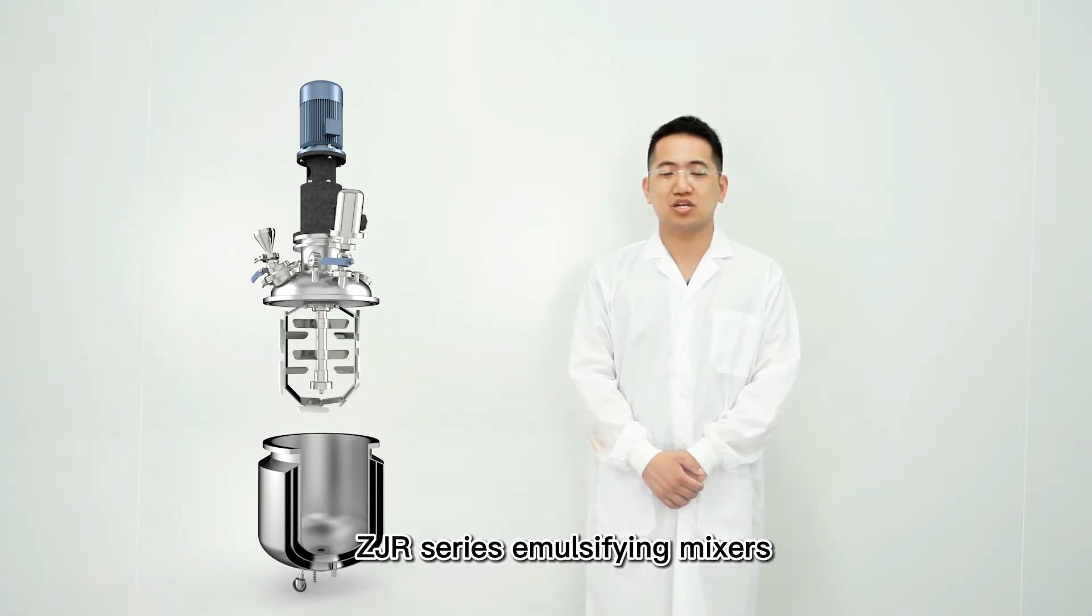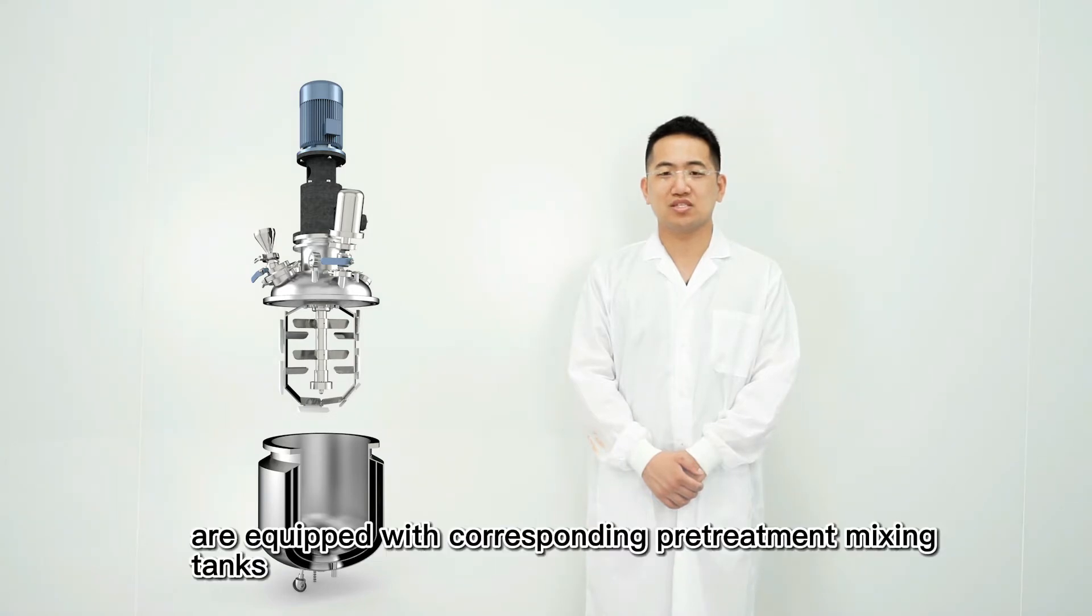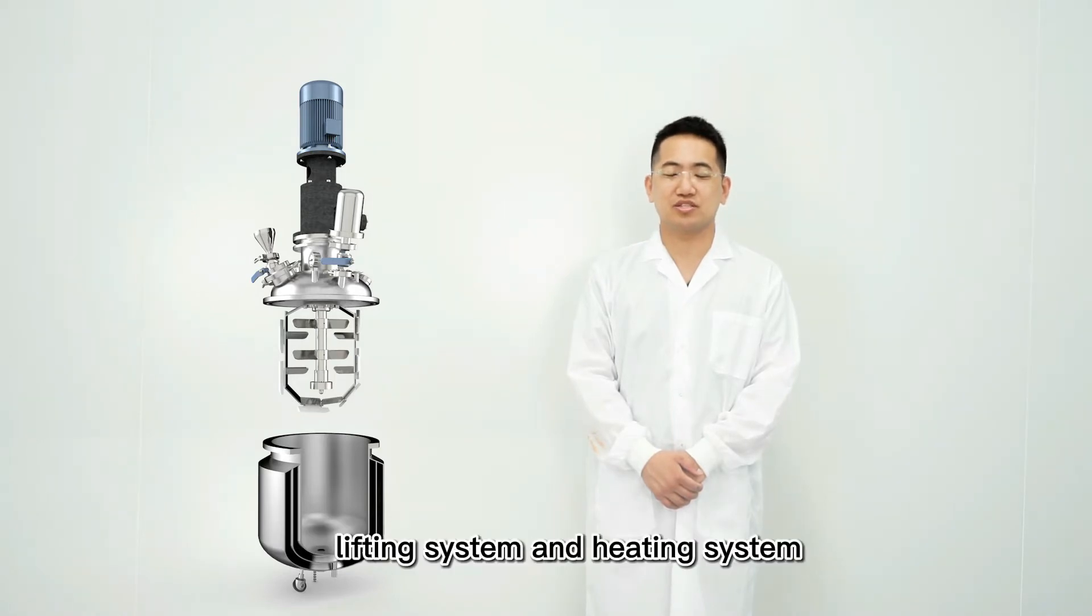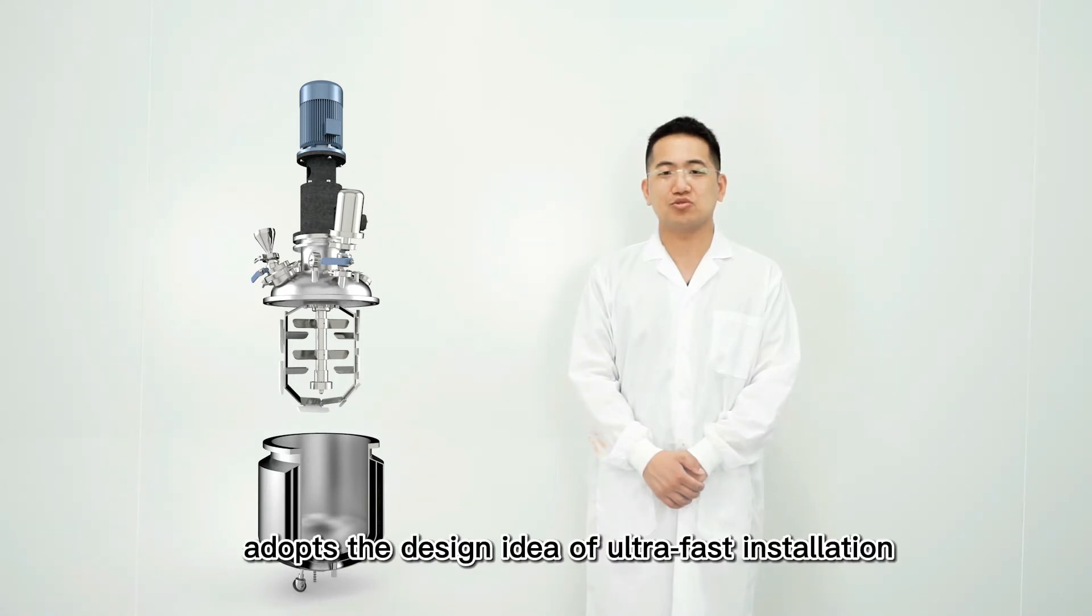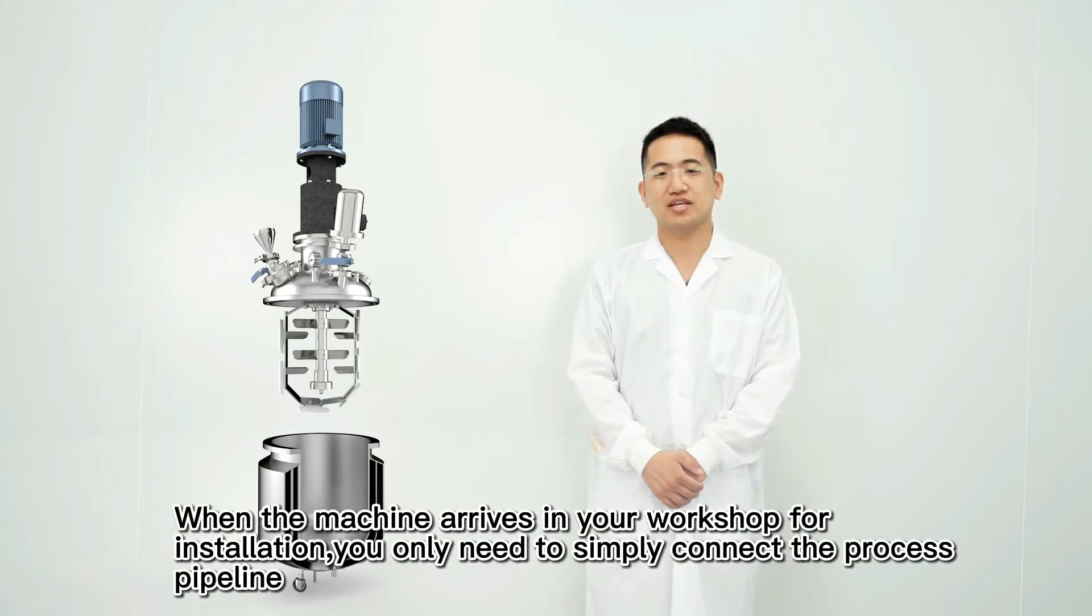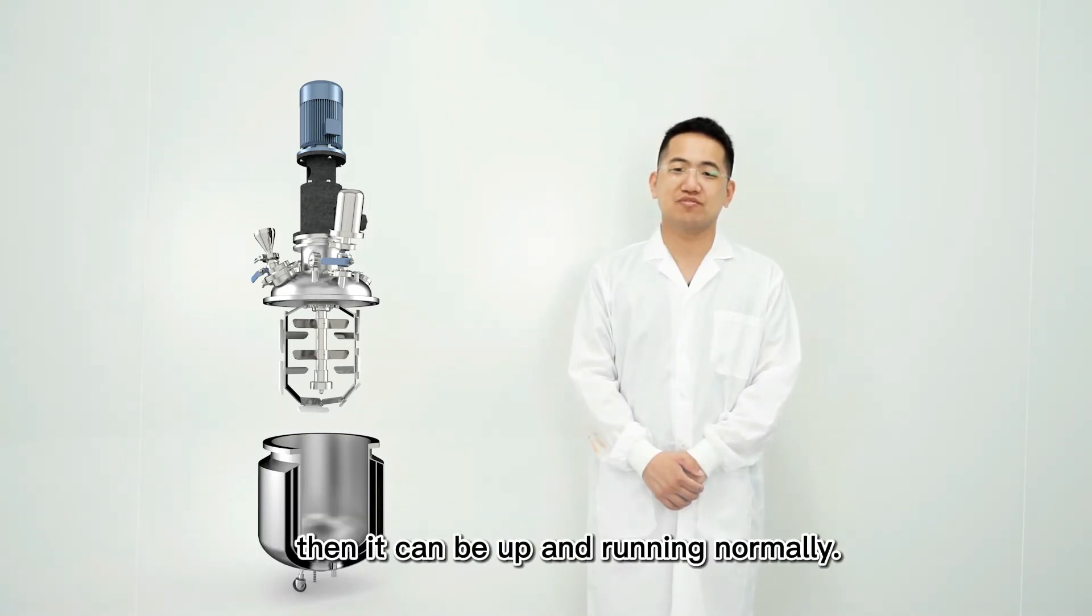The ZJR series emulsifying mixers are equipped with corresponding pretreatment mixing tanks, vacuum system, lifting system, and heating system. The ZJR series adopts the design idea of ultra-fast installation. When the machine arrives in your workshop for installation, you only need to simply connect the process pipeline, then it can be up and running normally. It is easy to complete.